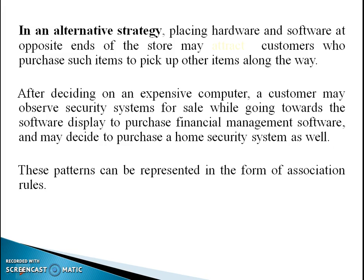The alternative strategy is placing hardware and software at opposite ends of the store, encouraging customers who purchase such items to pick up other items along the way. When a customer travels from one end to the other, they will see many products and may consider them for a future visit. For instance, after deciding on an expensive computer, a customer may notice a security system while heading toward the software display to purchase financial management software, and may decide to purchase a home security system as well. These patterns can be presented in the form of association rules.